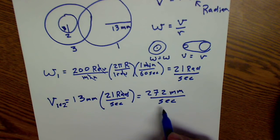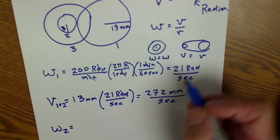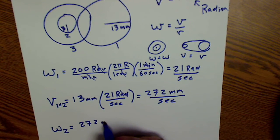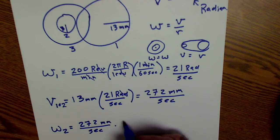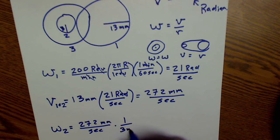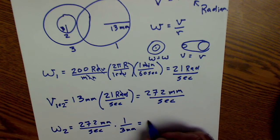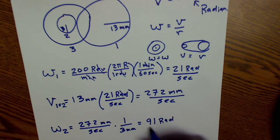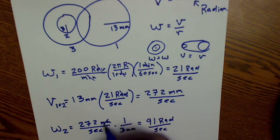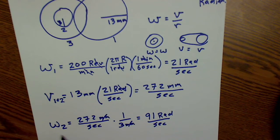And then lastly, it says, what is gear two's angular velocity? So angular velocity of gear two will be its linear velocity, 272 millimeters per second, divided by radius. Well, I'm going to multiply by the reciprocal. So I divide by three millimeters. And that's going to give me 272 divided by three is 90.7 or 91. No units in the numerator, so it has to be radians per second. Right? So no units in the numerator, it has to be radians. So angular velocity of gear two is 91 radians per second.